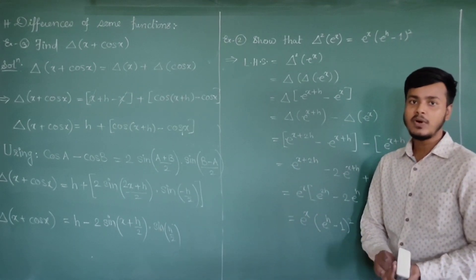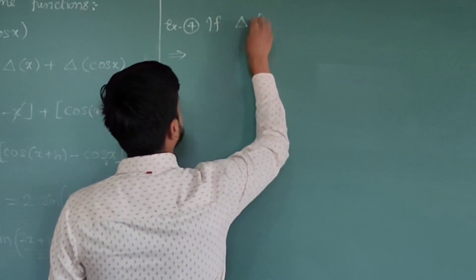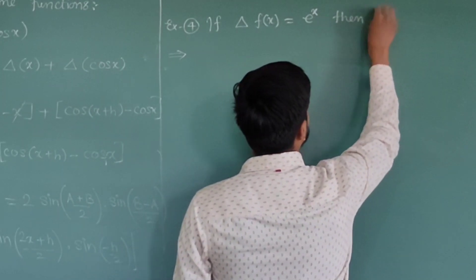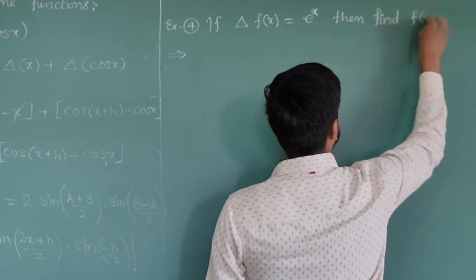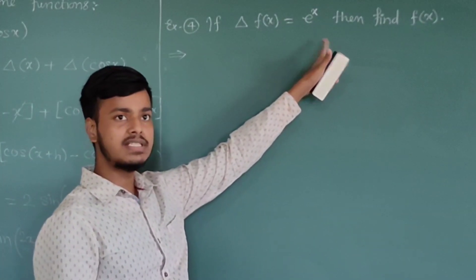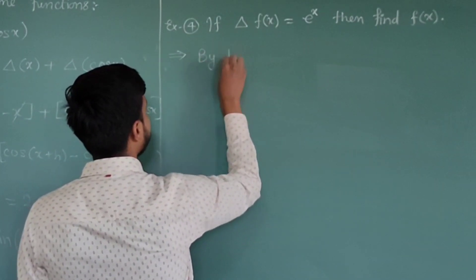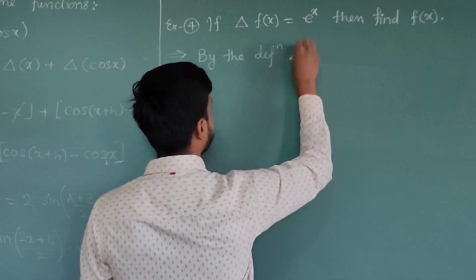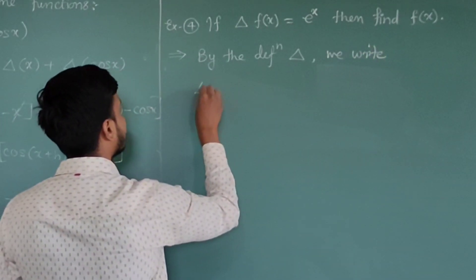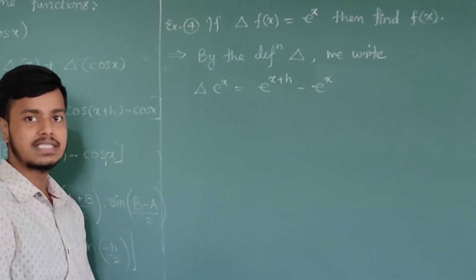Now let us see the very last problem of this learning video. If Δf(x) = eˣ, then find f(x). This is somewhat a tricky problem — you are given the forward difference of f(x) equals eˣ and must find f(x). Applying the definition: Δ(eˣ) = e^(x+h) − eˣ.